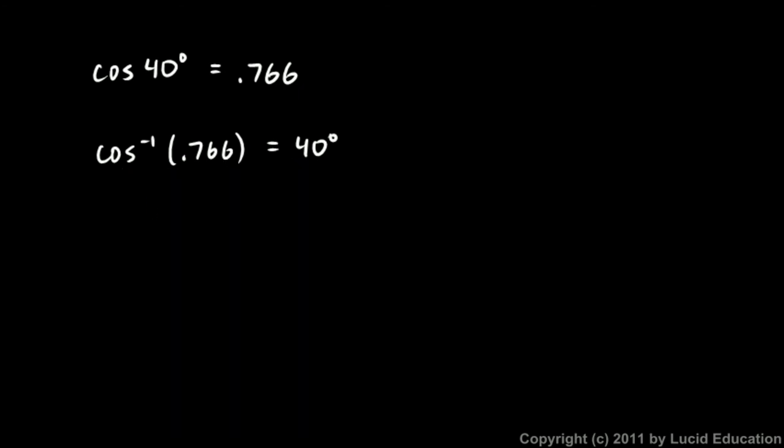Now, a quick comment, the notation here, this little negative one, again, is not an exponent. That's the standard notation for an inverse function. That is not the same thing as cosine of 0.766 to the power of negative one. Interpret this, when you read this, interpret it as the inverse cosine. So we have the cosine and the inverse cosine, and that's the same notation we use for inverse functions. A little negative one that looks like an exponent, but is not. Do not mentally interpret that as an exponent. That's an inverse function.